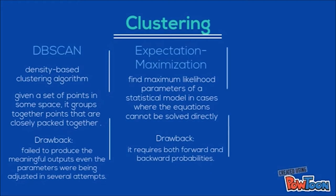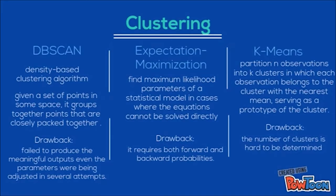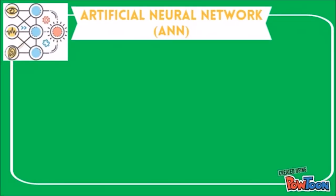K-means clustering aims to partition N observations into K clusters, in which each observation belongs to the cluster with the nearest mean, serving as a prototype of the cluster. The drawback for using it is that the number of clusters is hard to determine.